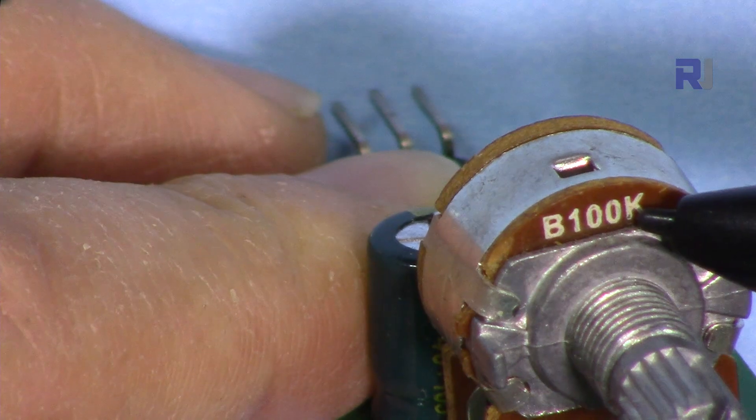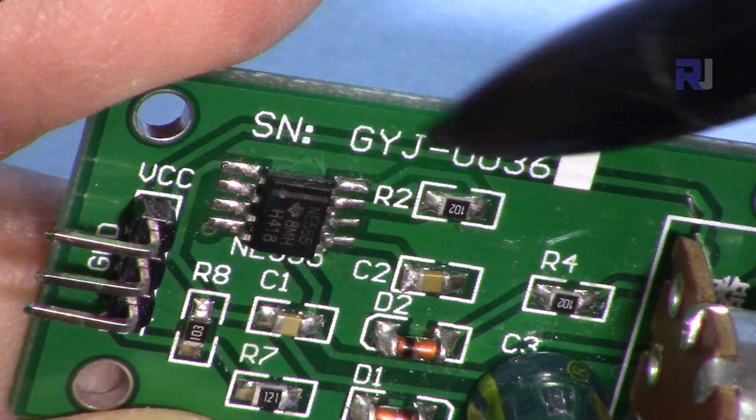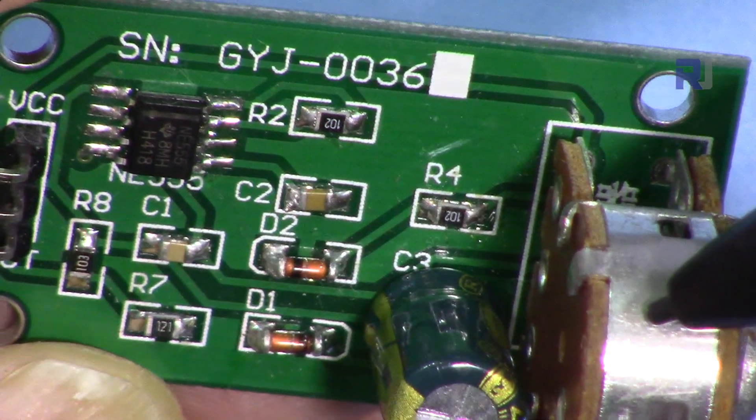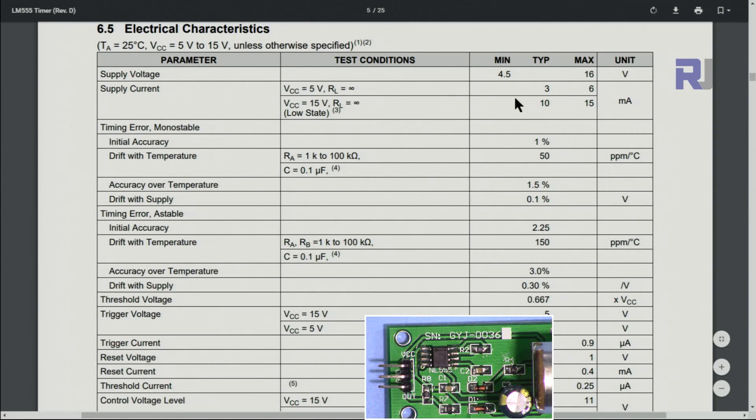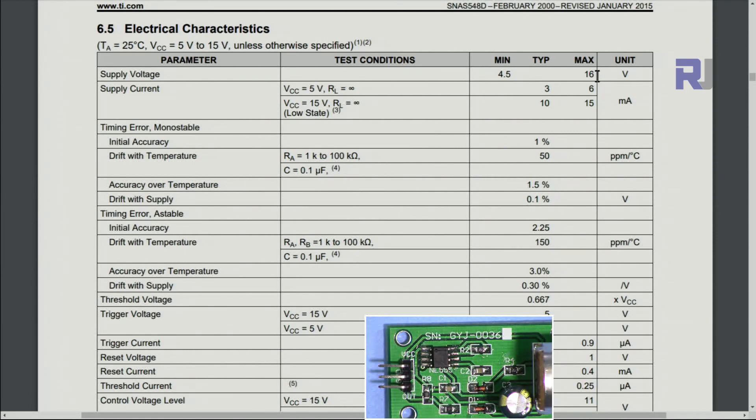This variable resistor is 100 kilohm with a switch. This VCC is directly connected to this switch so you can turn it on and off. Here if you look at the datasheet, the power supply can be 4.5 minimum up to 16 volts maximum.